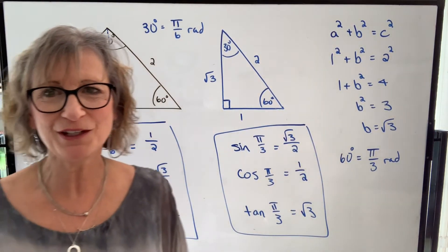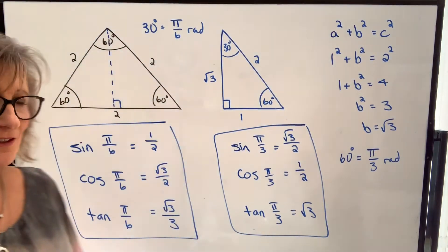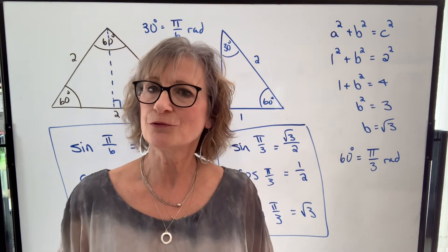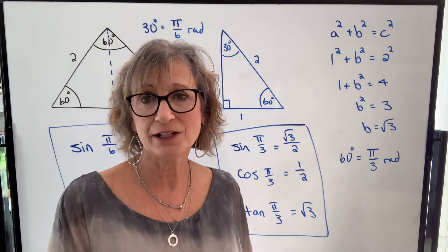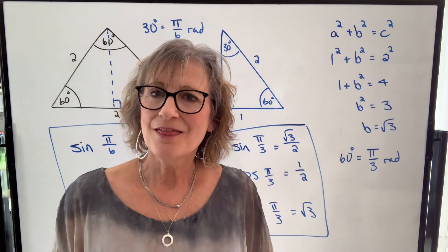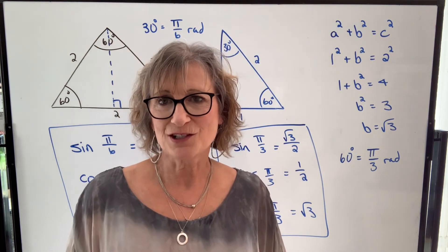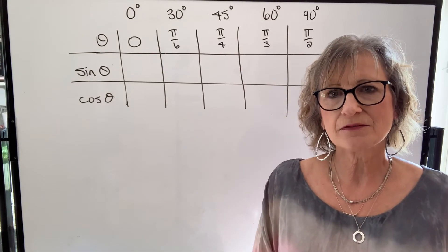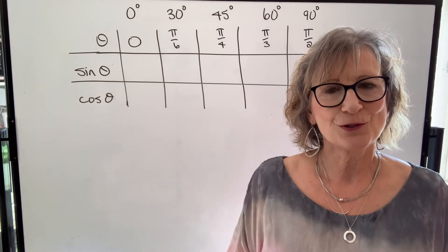I know what you're probably thinking — between the 45 degree or pi over 4 radian trig functions and these ones, that's a lot of numbers to remember, especially because they're fractions, they involve pi if your angle is in radians, and they involve radicals. So I'm going to show you a little trick that will hopefully help you remember these values if you're expected to know them.